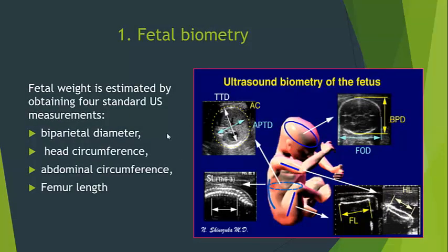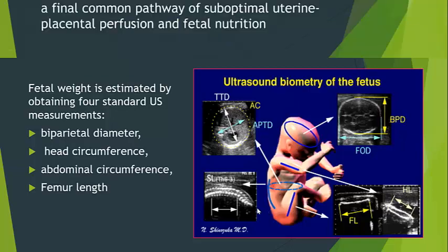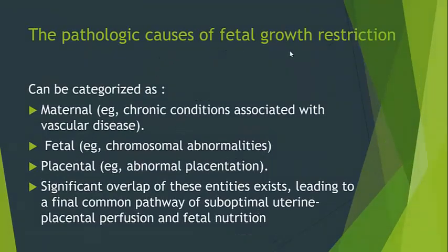The first thing that highlights a growth restricted baby is fetal biometry. When you do fetal biometry, you find that the fetal weight is below normal. To assess fetal weight, we use four standard ultrasound measurements: the biparietal diameter, the head circumference, the abdominal circumference, and the femur length. The machine will not calculate fetal weight unless you take all the required measurements. The pathological causes are categorized as maternal, fetal, or placental, with significant overlap — we may have more than one cause simultaneously.